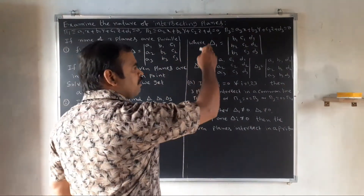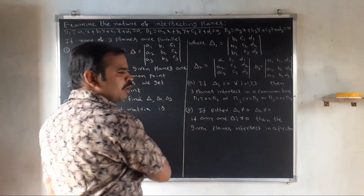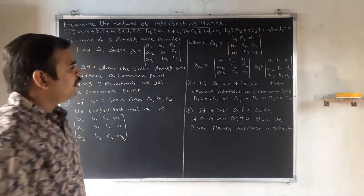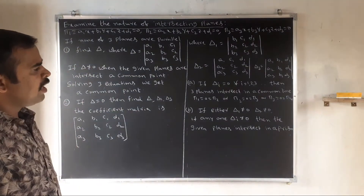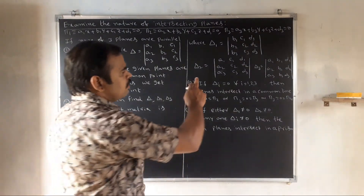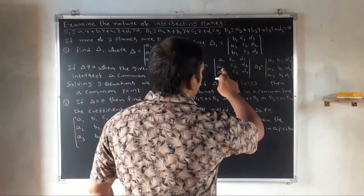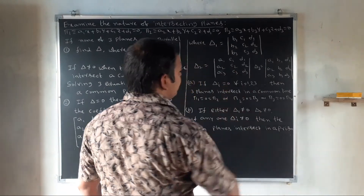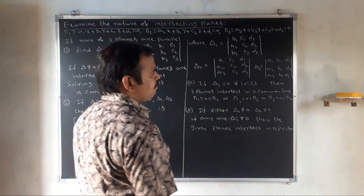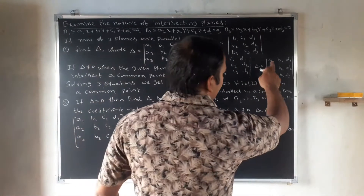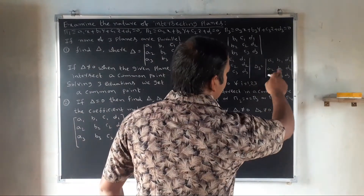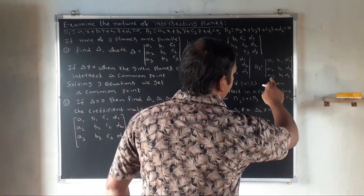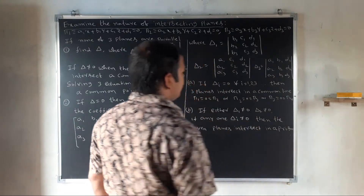Delta2 is obtained by replacing the second column with d1, d2, d3 — the determinant of (a1, c1, d1), (a2, c2, d2), (a3, c3, d3). Delta3 is obtained by replacing the third column — the determinant of (a1, b1, d1), (a2, b2, d2), (a3, b3, d3).